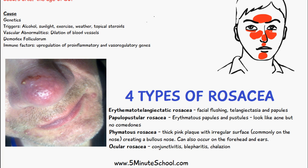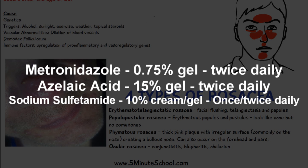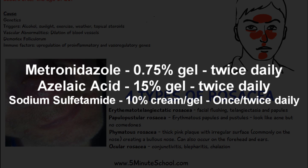Most cases of rosacea are treated with topical medications such as metronidazole, azelaic acid, and sodium sulfacetamide, which also contains sulfur. These are creams or gels applied usually once or twice daily.